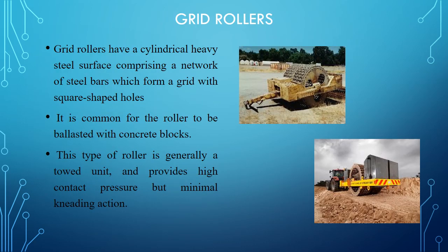Next is the grid roller. Grid rollers have a cylindrical heavy steel surface comprising a network of steel bars forming a grid with square-shaped holes. It is common for the roller to be ballasted with concrete blocks. This type of roller provides high contact pressure but minimal kneading action. Here we can see the pictures of grid rollers showing the steel grids and square grid patterns.